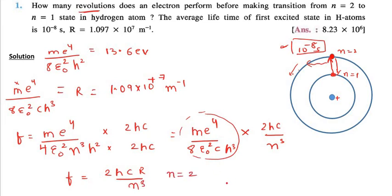Now I am going to substitute n equals 2 because my electron is in second orbit and I am going to find out its frequency in second orbit.